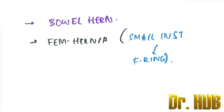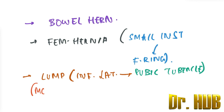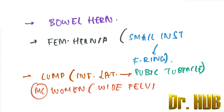It presents as a lump situated inferolaterally to the pubic tubercle. This type of herniation is more common in women due to the wider pelvic bone.